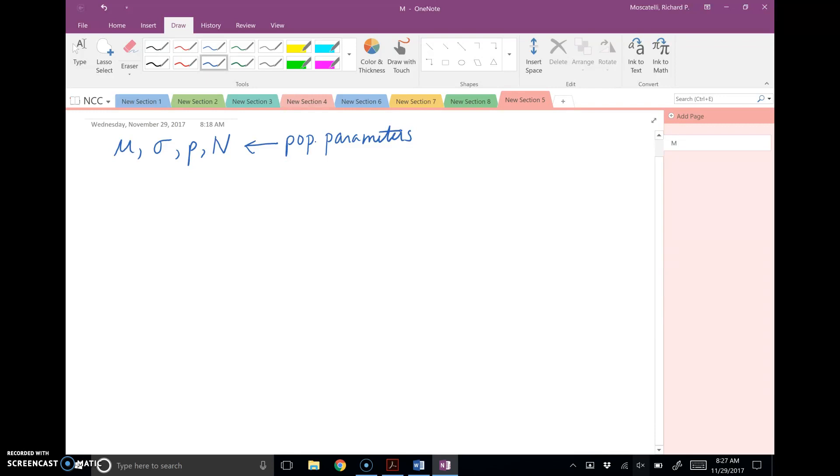And remember, what we did in the last section for confidence intervals is we learned how to estimate the population mean and the population proportion. In other words, remember, the estimator for the population mean is the sample mean, x bar. The estimator for the population standard deviation is s, the sample standard deviation.